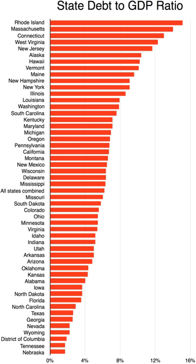Most of the states admitted to the Union after the original thirteen have been formed from organized territories established and governed by Congress in accord with its plenary power under Article IV, Section III, Clause II of the Constitution. Six subsequent states were never an organized territory of the federal government, or part of one, before being admitted to the Union.